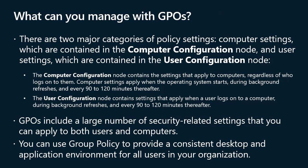There are two major categories of policy settings: computer settings, contained in the computer configuration node, and user settings, contained in the user configuration node. The computer configuration node contains settings that apply to computers regardless of who logs onto them. Computer settings apply when the operating system starts, during background refreshes, and every 90 to 120 minutes thereafter. The user configuration node contains settings that apply when a user logs onto a computer, during background refreshes, and every 90 to 120 minutes thereafter. Within both nodes are the Policies and Preferences nodes, which contain a hierarchy of folders with policy settings.